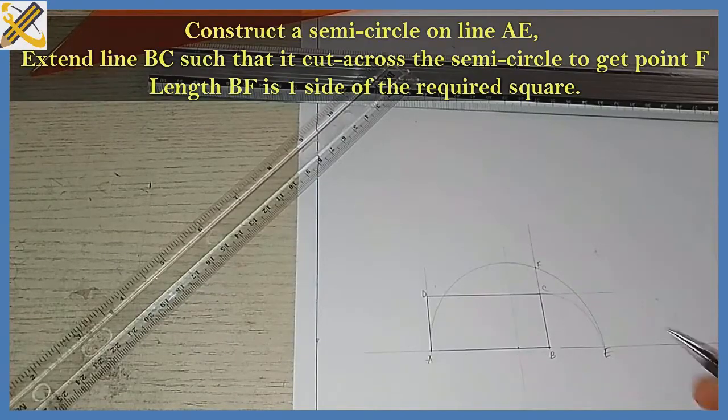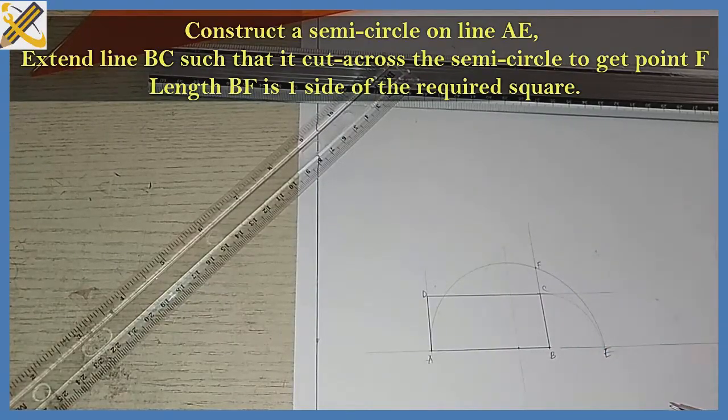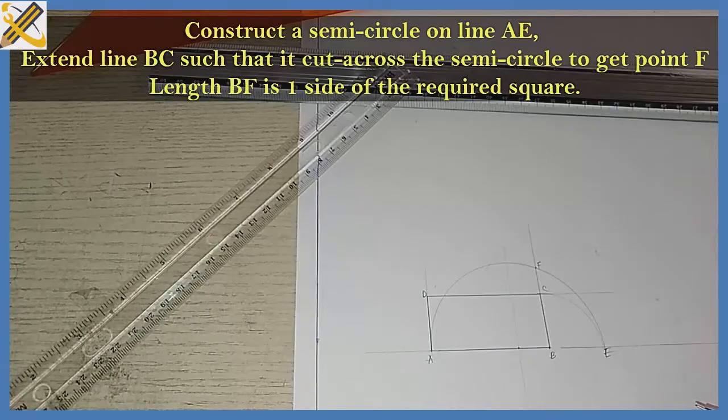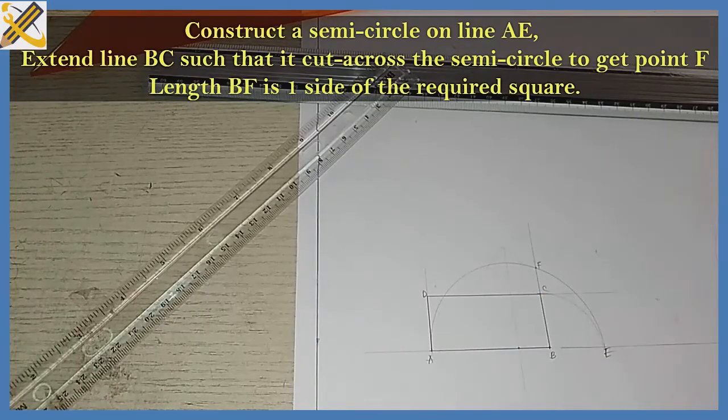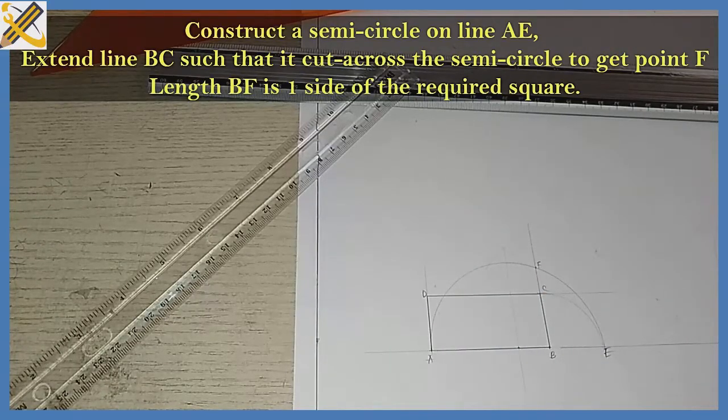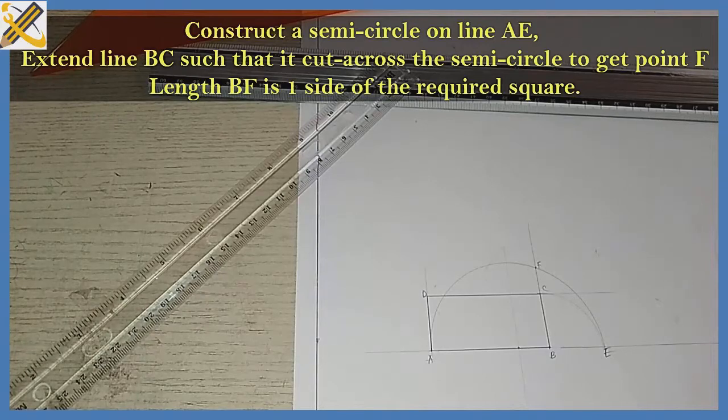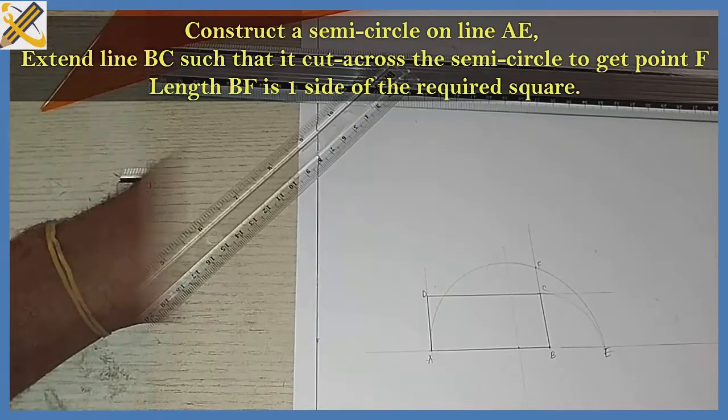BF is the length of one side of our square. So I'm going to replicate that now to get a complete square.